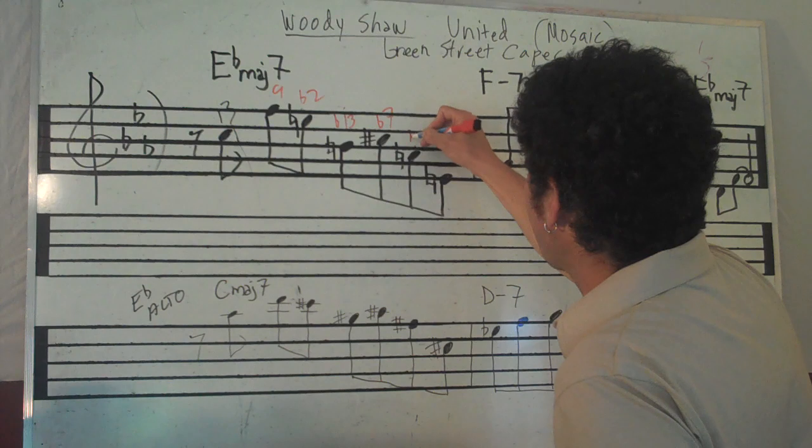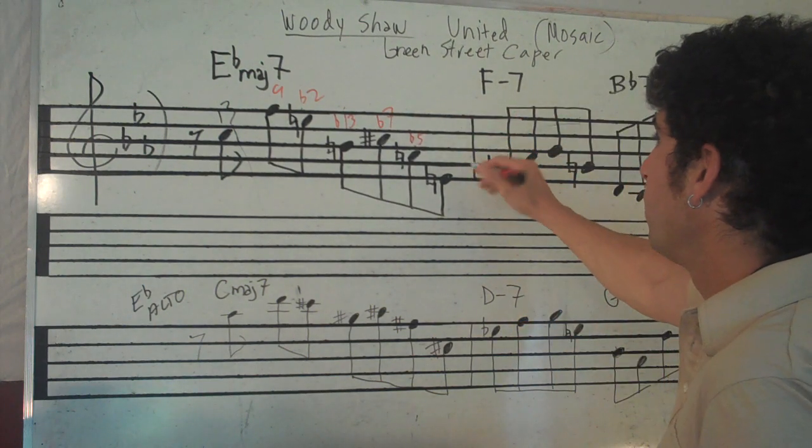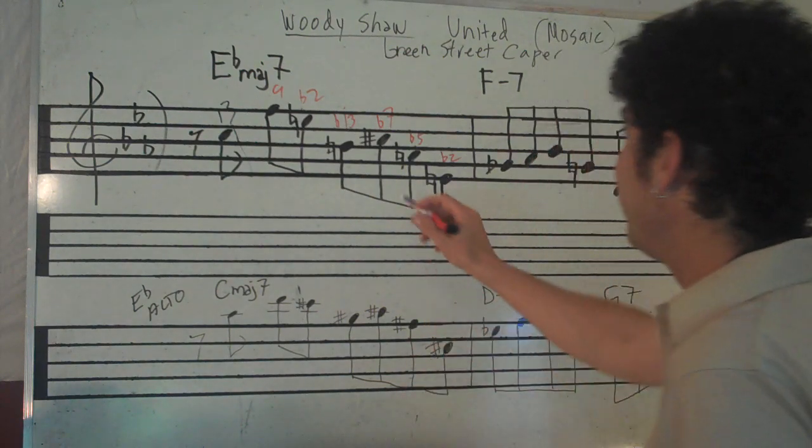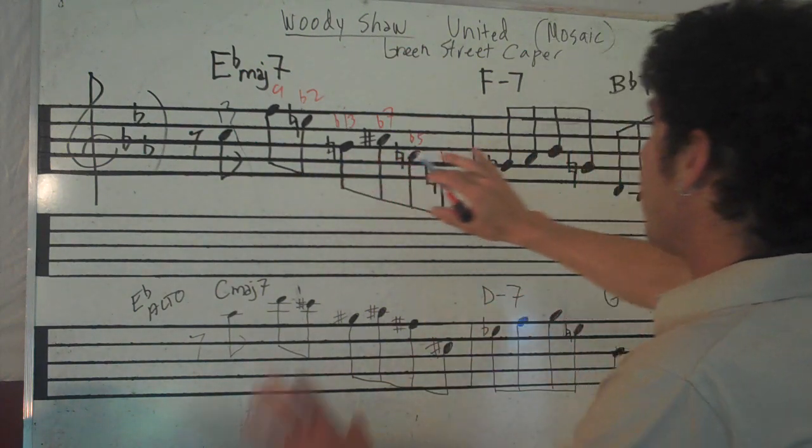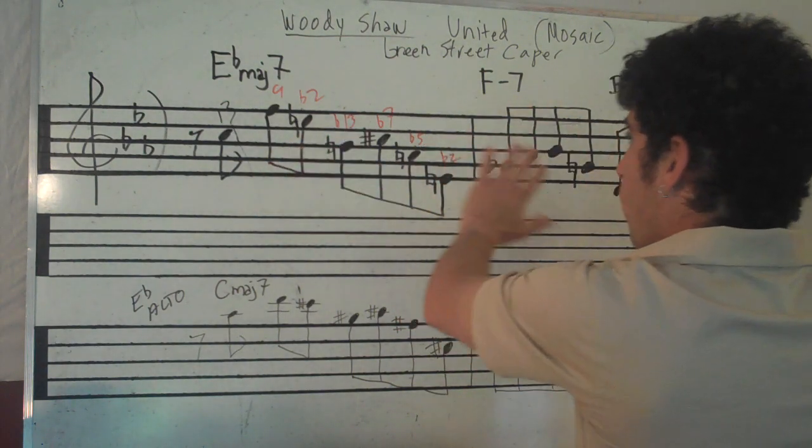And then he's got flat 5 here. And then he's got another flat 2. So what's going on here? He's taking it out, is what he's doing. But this is the tension part of it, and we'll get to where this is all going.